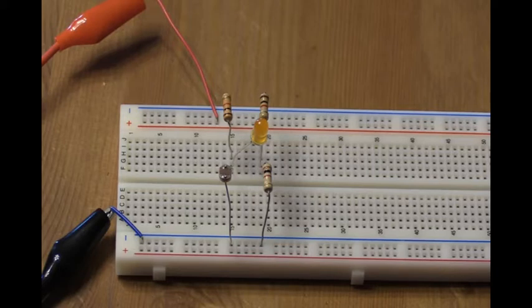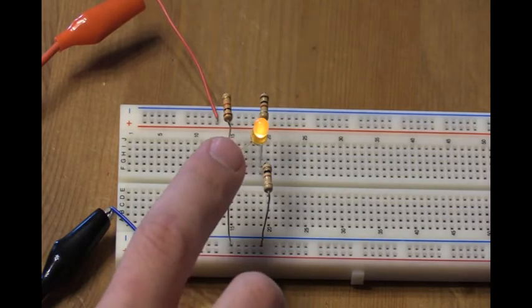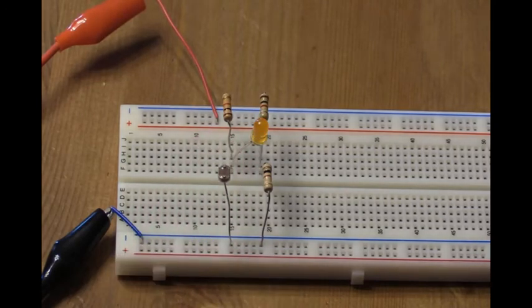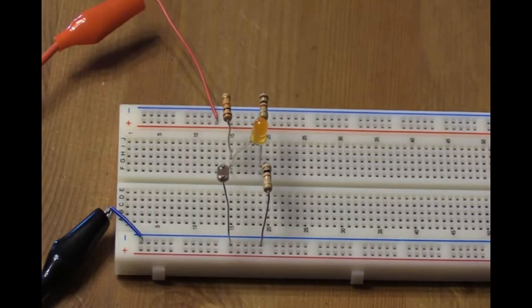So if I darken the light level above the photoresistor, say by covering it up, we will see the LED light up. And we can see that it works. And that is a circuit modeling the behavior of a night light that turns on when the light level goes down.